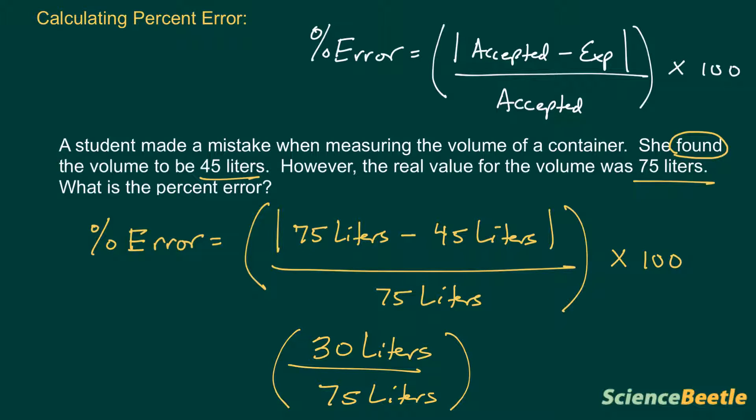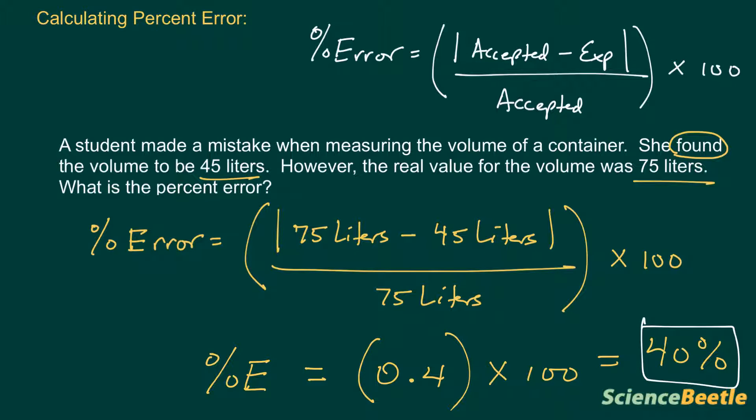This goes again multiplied by 100, and this should give us the percentage. Now what happens here is we're going to wind up canceling liters because the units actually cancel each other out. We're going to have to find out what 30 divided by 75 is. In this particular case, this whole thing winds up being 0.4. So if we take 0.4 and multiply that by 100, the percent error here is going to be equal to 40 percent, and that is the percent error for this particular problem.